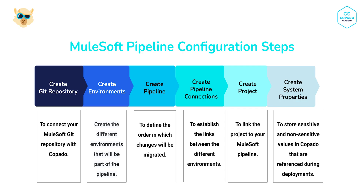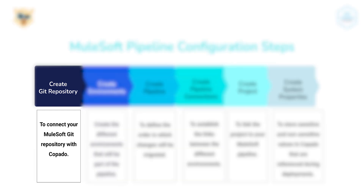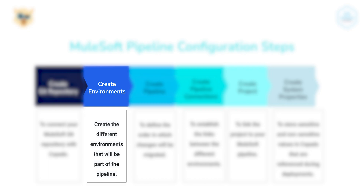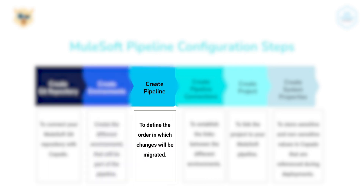Here's a broad overview of the process to configure the MuleSoft pipeline. First, create the Git repository record to connect your MuleSoft Git repository with Capato. Next, create the different environments that will be part of the pipeline: your local dev environment, staging, and production. Once you have created all the environments, create the pipeline record to define the order in which changes will be migrated.